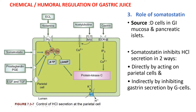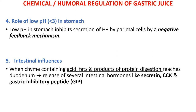Somatostatin has an inhibitory effect on HCl secretion. It is a gastrointestinal hormone secreted by D cells of the gastrointestinal mucosa and sometimes pancreatic islets. Somatostatin inhibits gastric acid secretion either by acting directly on parietal cells or indirectly by inhibiting the gastrin-producing G cells. Additionally, when chyme containing acid, fats, and products of protein digestion reaches the duodenum, intestinal hormones like secretin, cholecystokinin, and gastric inhibitory peptide are released, reducing gastric acid secretion.